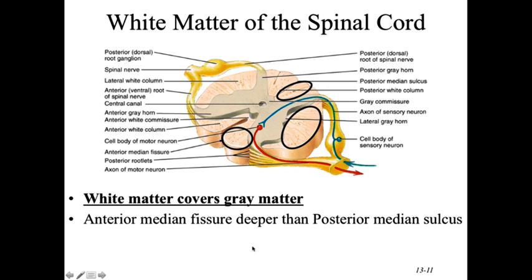There is a typo in the slide: it labels ventral rootlets as posterior rootlets. Since this is a motor neuron — a ventral root — those should be labeled ventral rootlets, not posterior rootlets. Cross that out and replace it with ventral rootlets.